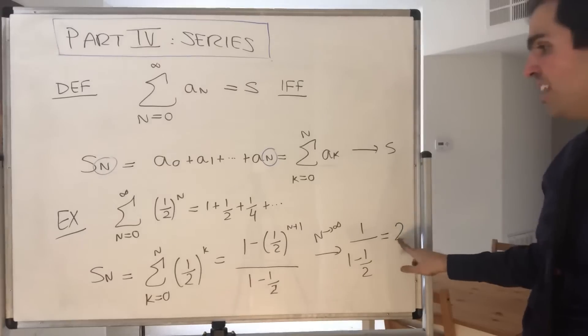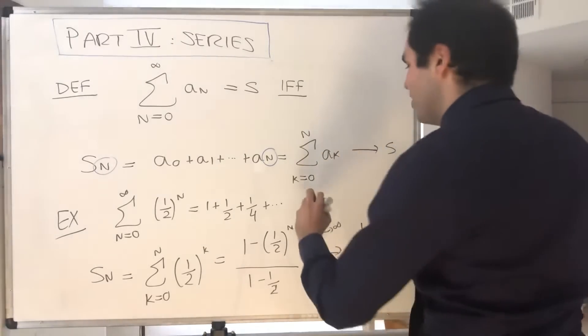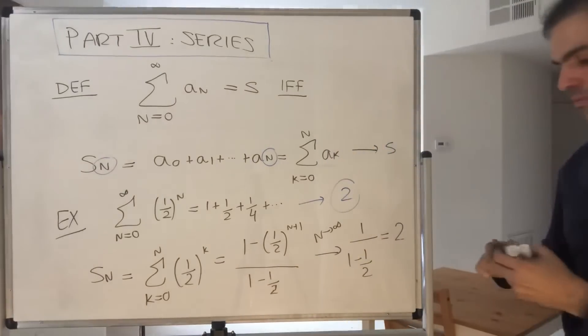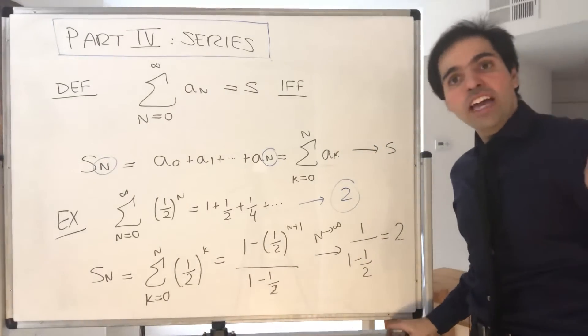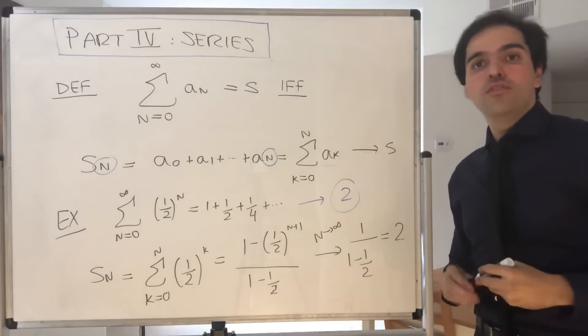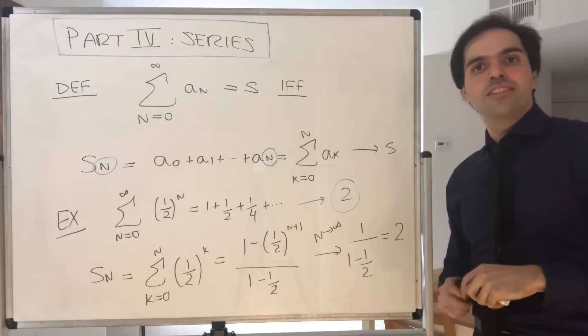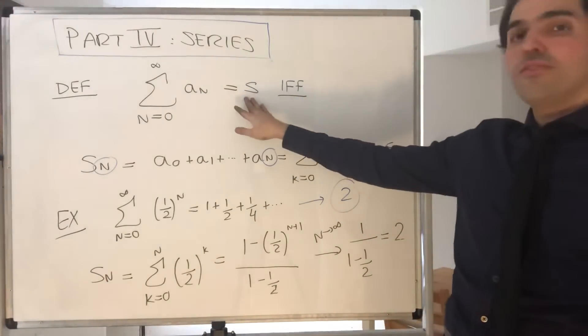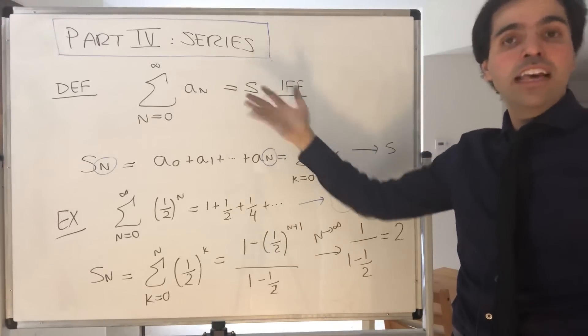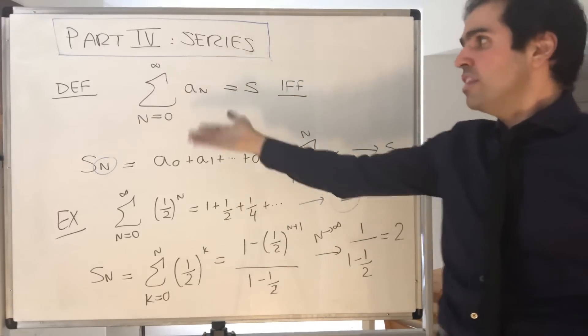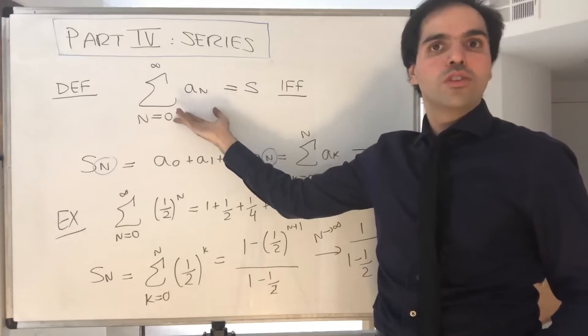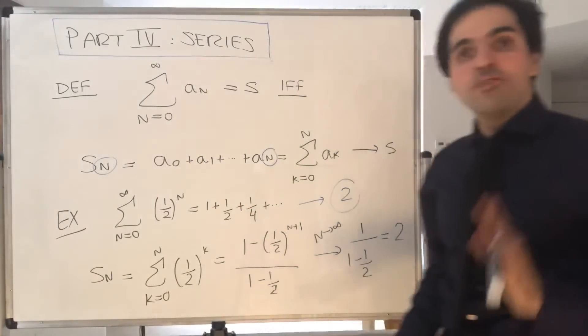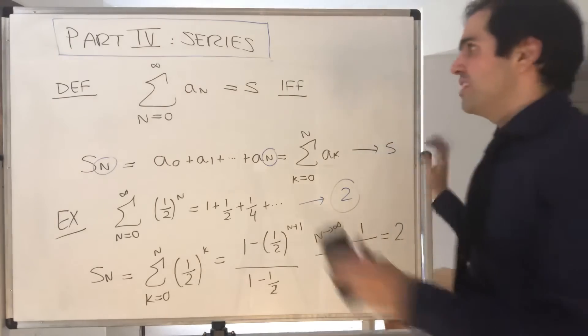So, because S_n goes to 2, we can legitimately say the geometric series goes to 2 as well. Now, in general, it is very hard to figure out the exact value of a series. But instead, let's just solve an easier problem. Instead of determining S, let's just ask ourselves, when does a series converge? So, when does the limit of this sequence exist? And luckily, there are much easier tests to figure that out.